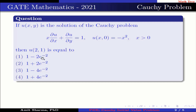Option 1: 1 minus 2 times e to the power minus 2. Option 2: 1 plus 2 times e to the power minus 2. Option 3: 1 minus 4 times e to the power minus 2. Option 4: 1 plus 4 times e to the power minus 2.